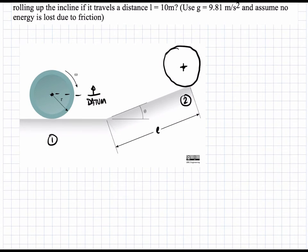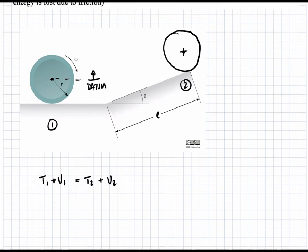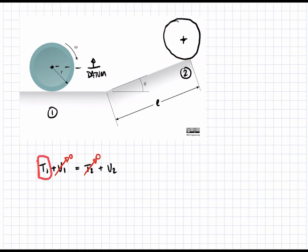Starting with our energy equation: T1 plus V1 equals T2 plus V2. We can eliminate terms because the initial potential energy is zero since we set our datum to the center of gravity of the initial state, and the final kinetic energy is zero because the cylinder reaches complete rest. This condenses to: initial kinetic energy equals the final potential energy, with the datum set at the center of gravity of the initial state.